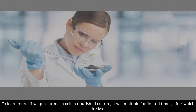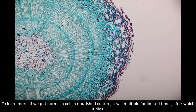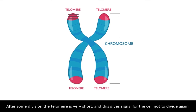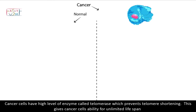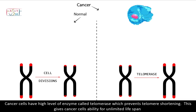If we put a normal cell in a nourished culture, it will multiply for a limited number of times, after which it dies. The reason for this is that with each cell division, there is a cut in the terminal part of chromosomes, a part known as the telomere. After some divisions, the telomere becomes very short, and this gives the signal for the cell not to divide again. Cancer cells have high levels of an enzyme known as telomerase, which prevents telomere shortening, giving cancer cells the ability for an unlimited lifespan.